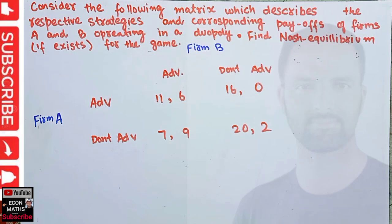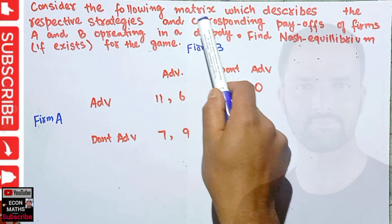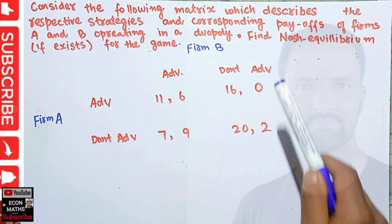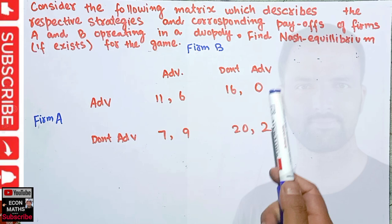Hi, this is Halal. In this video on the mathematical economics series, we will learn about finding the Nash equilibrium for a two-player game. The question describes a payoff matrix for two farmers, Firm A and Firm B, operating in a duopoly. We have to find the Nash equilibrium for this duopoly game, if it exists.